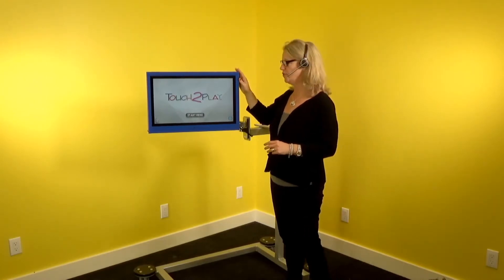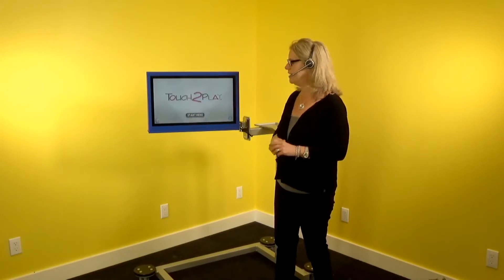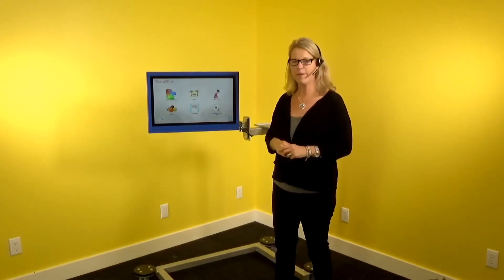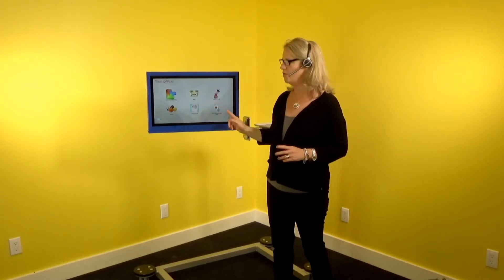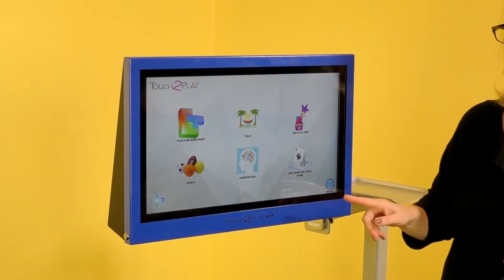So this is our 21 inch screen with almost 70 games available and it's super easy for seniors to use. Set up so that there are big buttons and easy organization of the games. So the 70 games are divided into six categories.